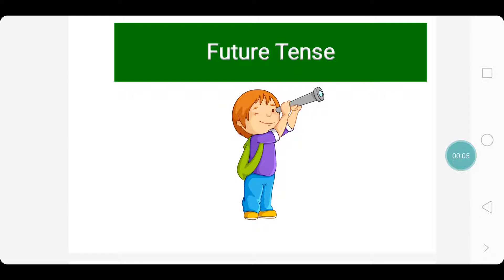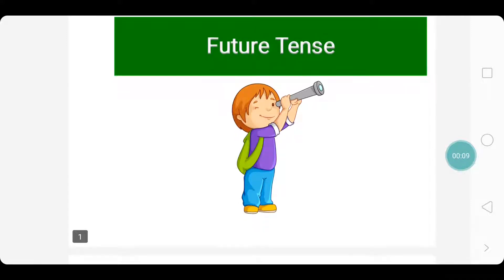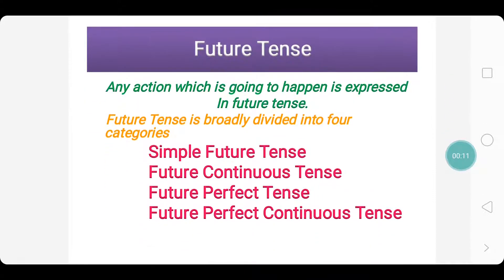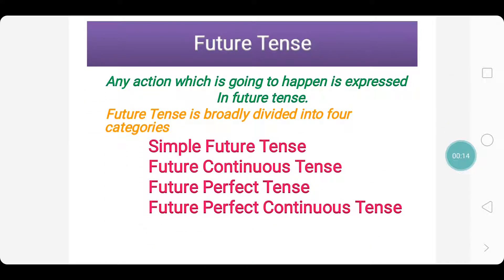Hello children, today we will learn about Future Tense. What is Future Tense? Any action which is going to happen is expressed in Future Tense. Future Tense is broadly divided into four categories: Simple Future Tense, Future Continuous Tense, Future Perfect Tense, and Future Perfect Continuous Tense.